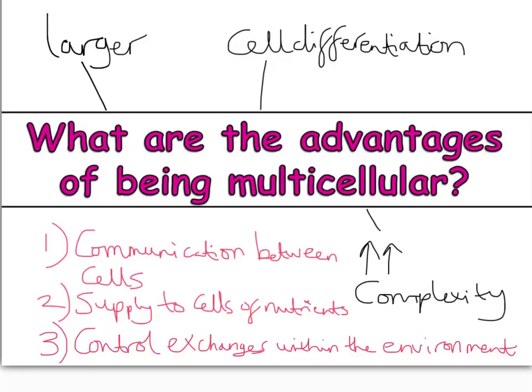Communication between cells, supplying cells with nutrients, and the ability to control exchanges within the environment are all complex things that specialised organ systems allow multicellular organisms to do. You can differentiate, you can become larger — those are the simplistic advantages of being multicellular. The key thing is multicellular means multiple cells, very much in contrast to the unicellular organisms we started with. We can conclude that it is better to be multicellular than unicellular.